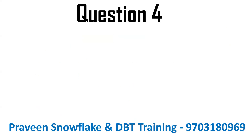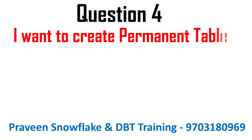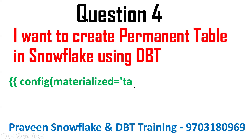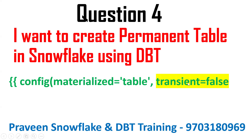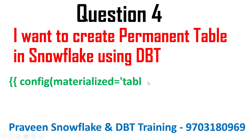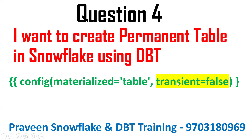The next question is: how do I create a permanent table in Snowflake using DBT? By default, a transient table is created, but if you want to make it permanent, you set materialized equal to table and also specify transient equal to false in your config. By default it creates a transient table, but by setting transient equal to false, a permanent table will be created.